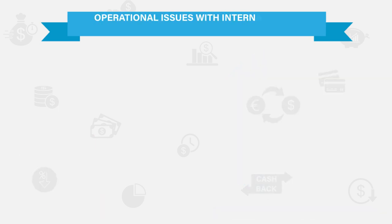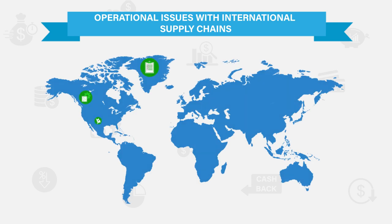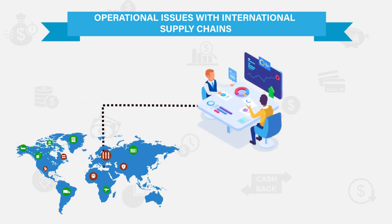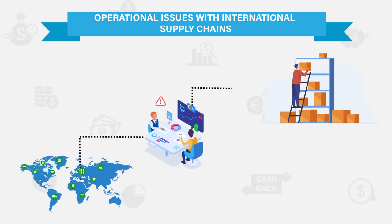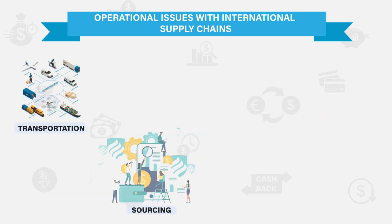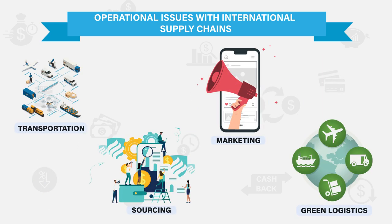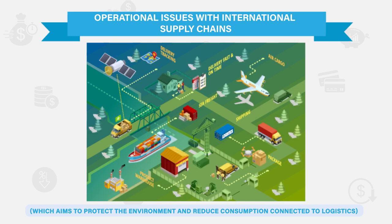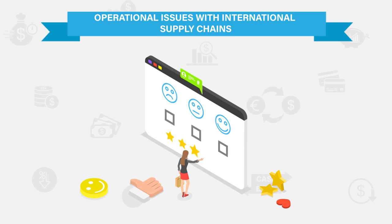The international supply chain is not a perfect entity, and issues can always emerge. The most frequently met operational issues can appear in sectors like inventory, transportation, sourcing, marketing, green logistics — which aims to protect the environment and reduce consumption connected to logistics — and in the operations connected to consumers' behaviour.